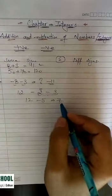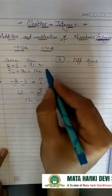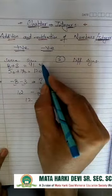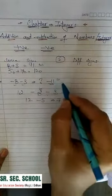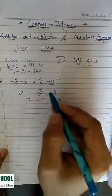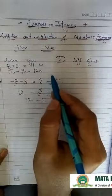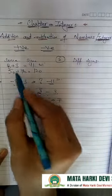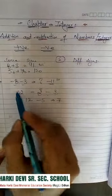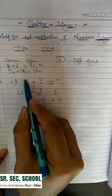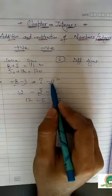So the rule is: if the numbers have the same sign, we add the numbers and keep the same sign. Both positive numbers give a positive result, and both negative numbers give a negative result.